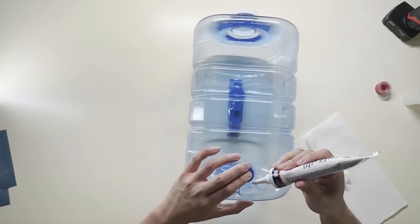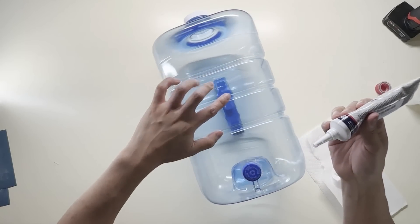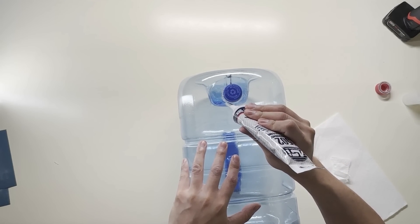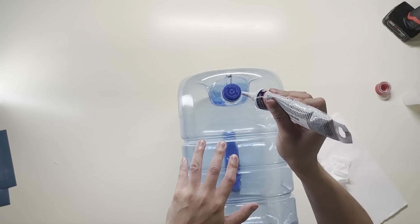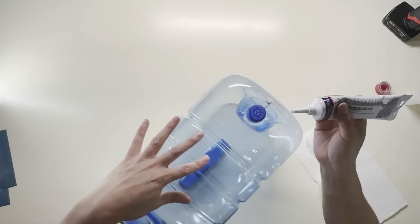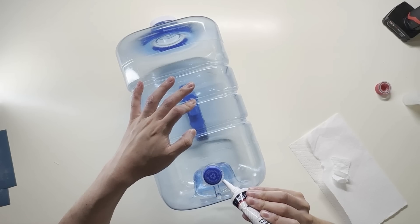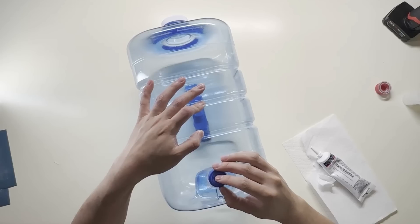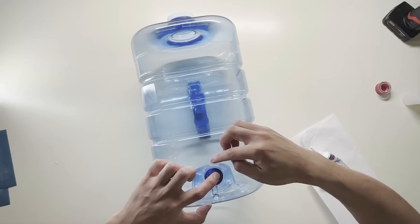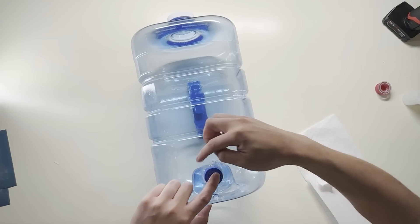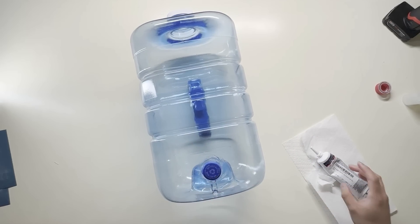Apply a second bead of silicone to ensure an air-tight seal. Wipe off any excess. You want to let the silicone cure for at least 24 hours before you fill the jug with water.